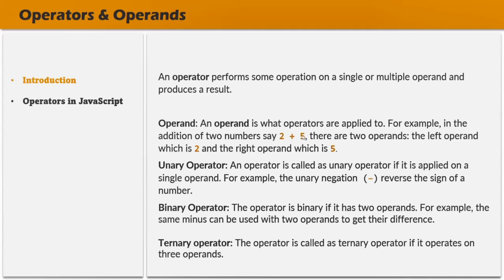We can classify operators into three types: unary operator, binary operator, and ternary operator. An operator is called a unary operator if it is applied on a single operand. An operator is called a binary operator if it operates on two operands — for example, the plus operator operating on 2 and 5. And when an operator operates on three operands, it is called a ternary operator.